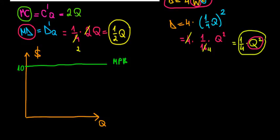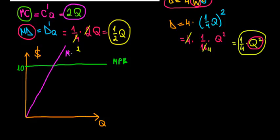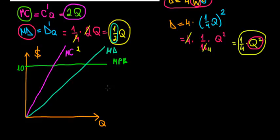The marginal private benefit line is fixed at $10. The marginal cost equals 2Q, which is an upward-sloping line with a relatively steep slope of 2. The marginal damage equals (1/2)Q, which also slopes upward but with a flatter slope of one-half — less steep than the marginal cost line. That's how all three curves look on the graph.